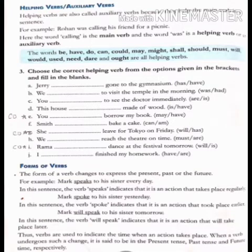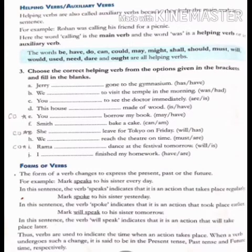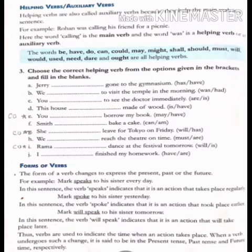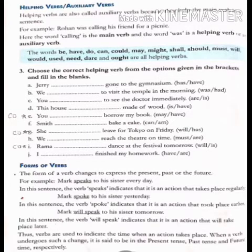She blank leave for Tokyo on Friday. We are talking about the future, right? On Friday she is leaving. So she will leave for Tokyo on Friday. Then, we reach the theatre on time. We must reach the theatre on time. It is compulsory that we should reach there on time.